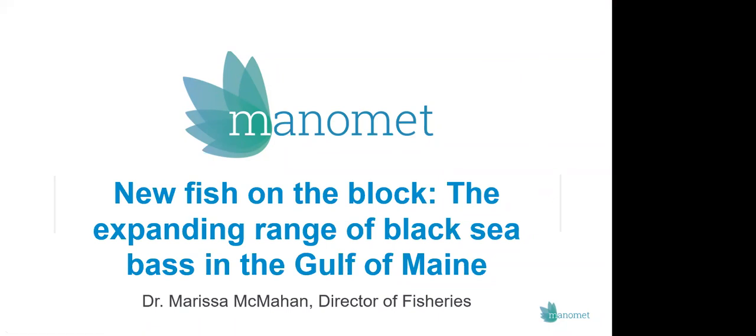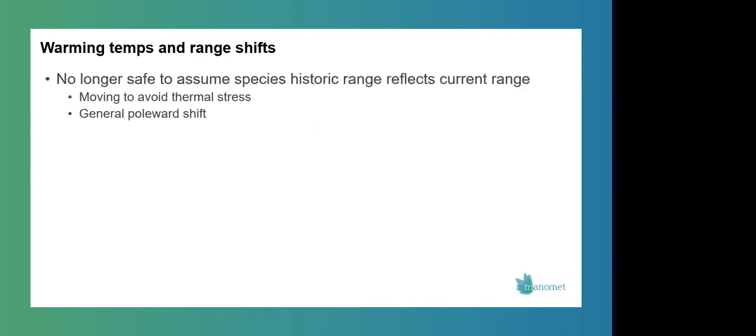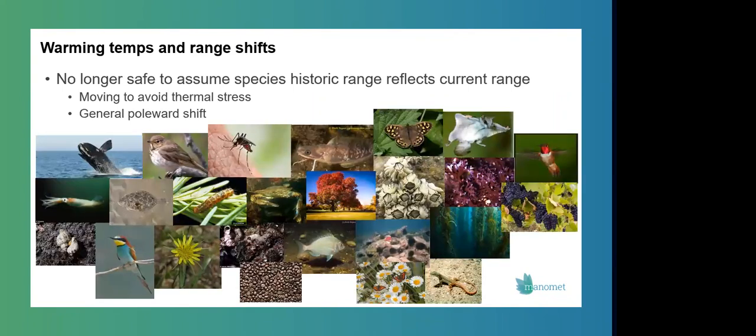So I'm going to start with just some broad background about warming temperatures and species distribution. What we've really seen as temperatures have warmed globally is that it's really no longer safe to assume that a species' historic range reflects its current range. And that's because species are moving to avoid thermal stress. In general, these are poleward movements, essentially species moving in the direction that reduces thermal stress. And we've now seen this in thousands of examples across the world in aquatic, marine, and terrestrial species.